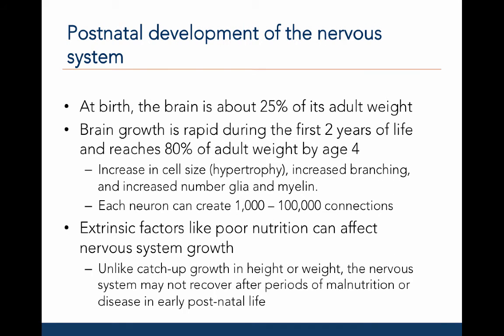At birth, the brain is about 25% of its adult weight, but undergoes rapid development during the first two years of life and eventually reaches 80% of adult weight by age four. This increase in weight is due to an increase in cell size or hypertrophy, increased branching, and an increased number of glia and myelin. Each neuron can create 1,000 to 100,000 connections. Extrinsic factors like poor nutrition can have a long-lasting effect on the nervous system's growth. Unlike catch-up growth in height or weight, the nervous system may not recover after periods of malnutrition or disease in early postnatal life.